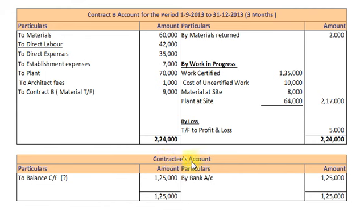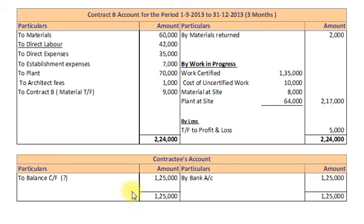Now we will prepare Contract T's Account for Contract B. In Contract T's Account, Credit side by Bank Rs. 1,25,000 — this is cash received from Contract T. By closing Contract T's Account we get Balancing Figure Rs. 1,25,000 on Debit side. This will be carried forward for next year, and the account closes by Rs. 1,25,000.